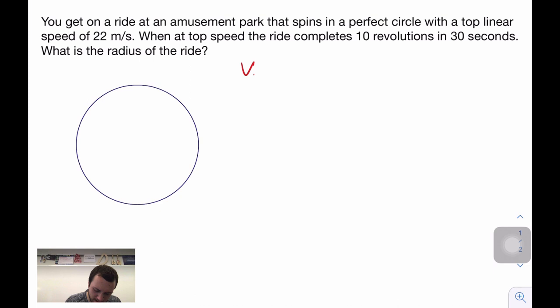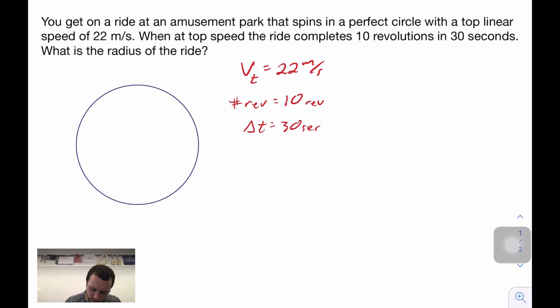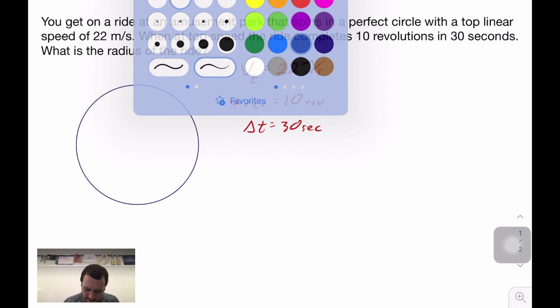Based on that, our variables that we know are the tangential velocity of 22 meters per second, we know the number of revolutions at top speed is 10, and we know our time of those 10 revolutions is 30 seconds.